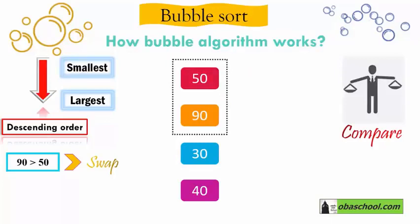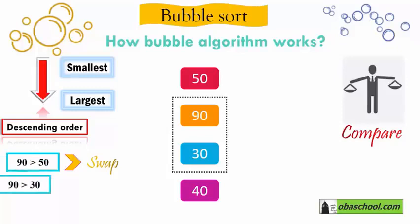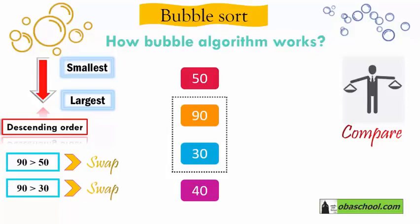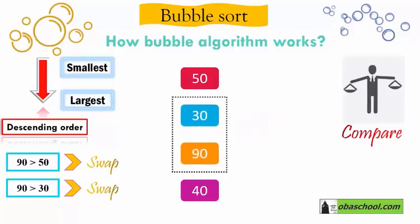Now we compare the second and third numbers: which is the smallest, 90 or 30? Of course, 90 is bigger than 30, and we need to put the smallest on top. So we swap 90 and 30 — 90 goes down and 30 goes up.